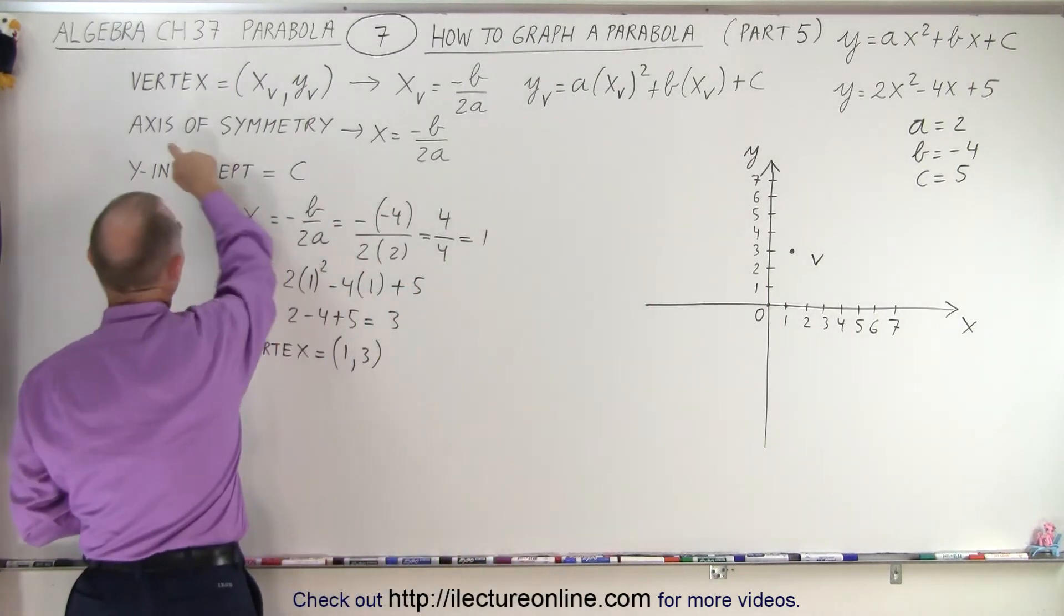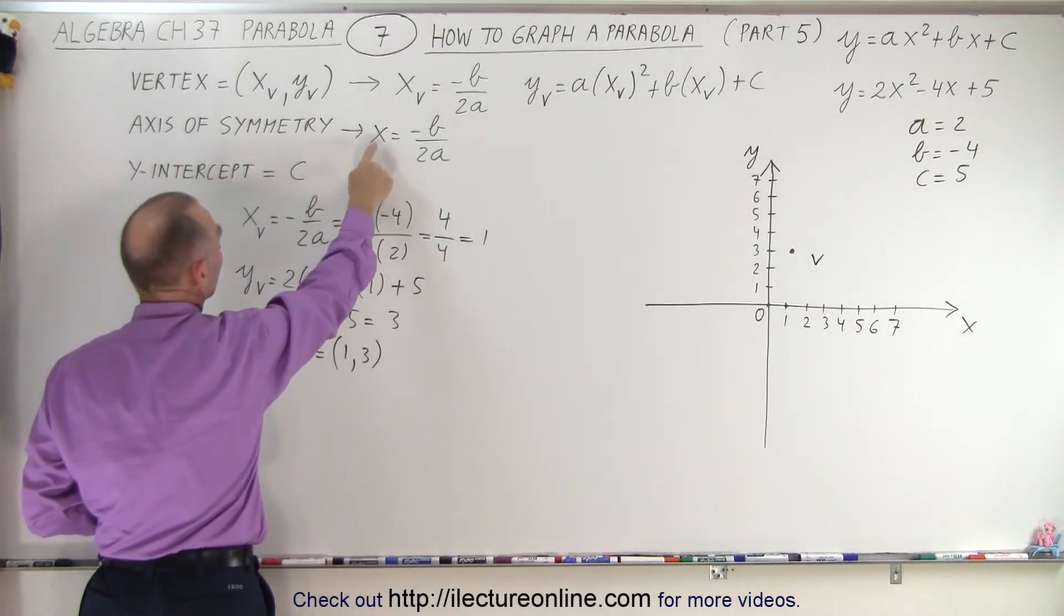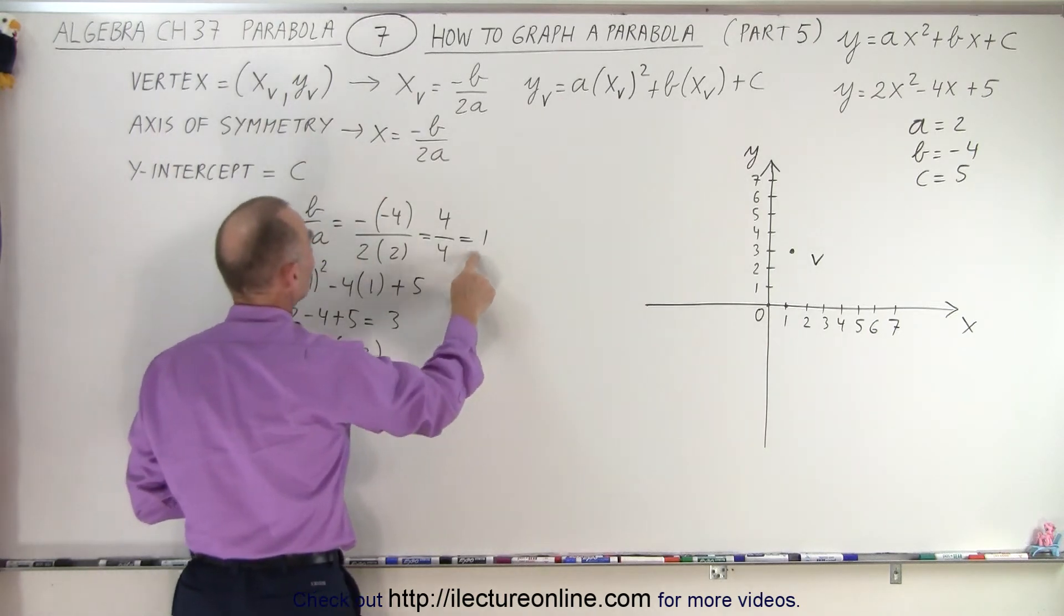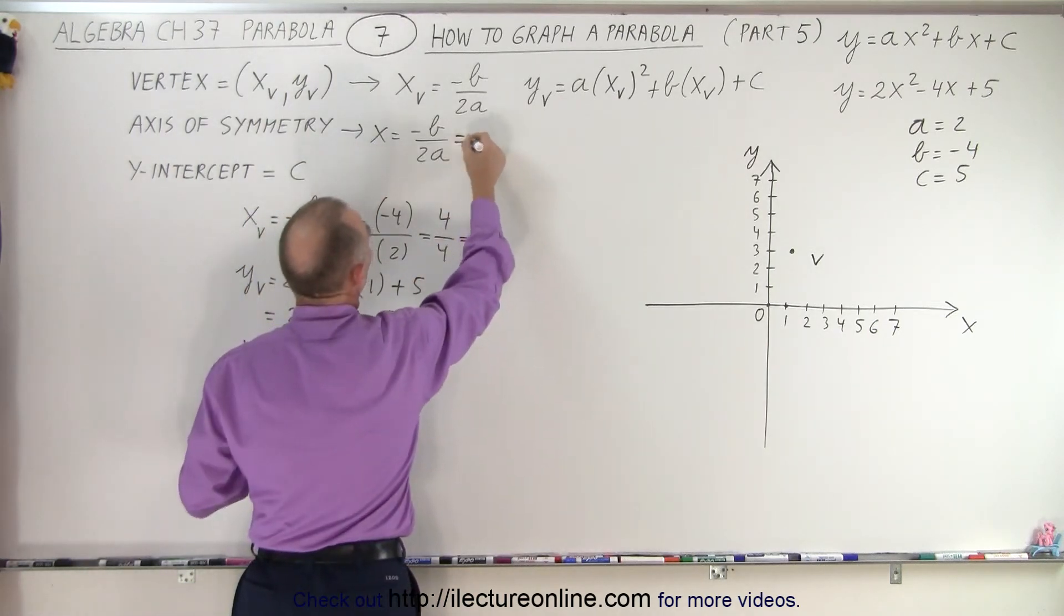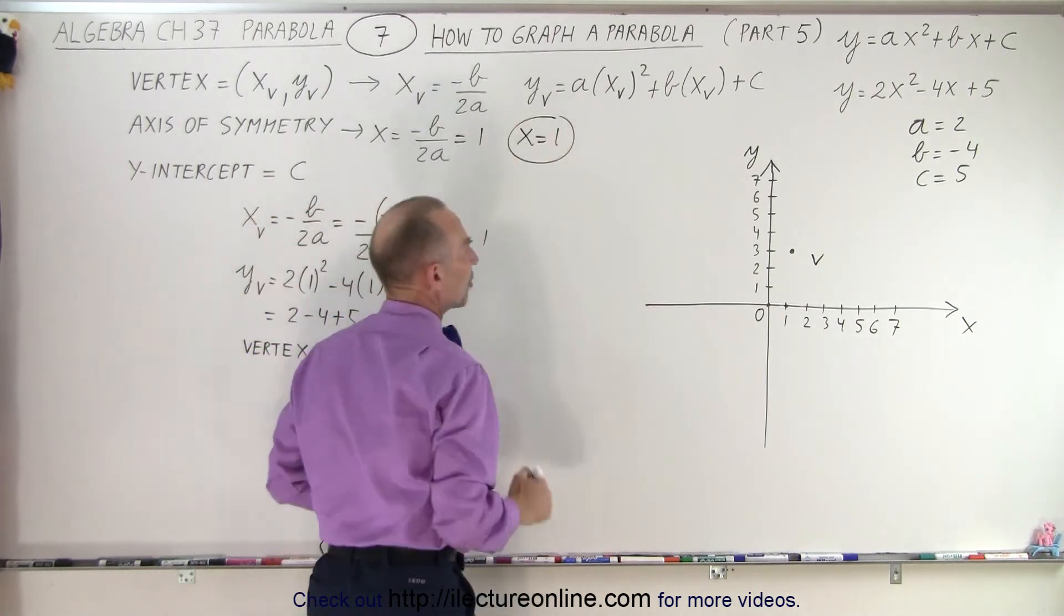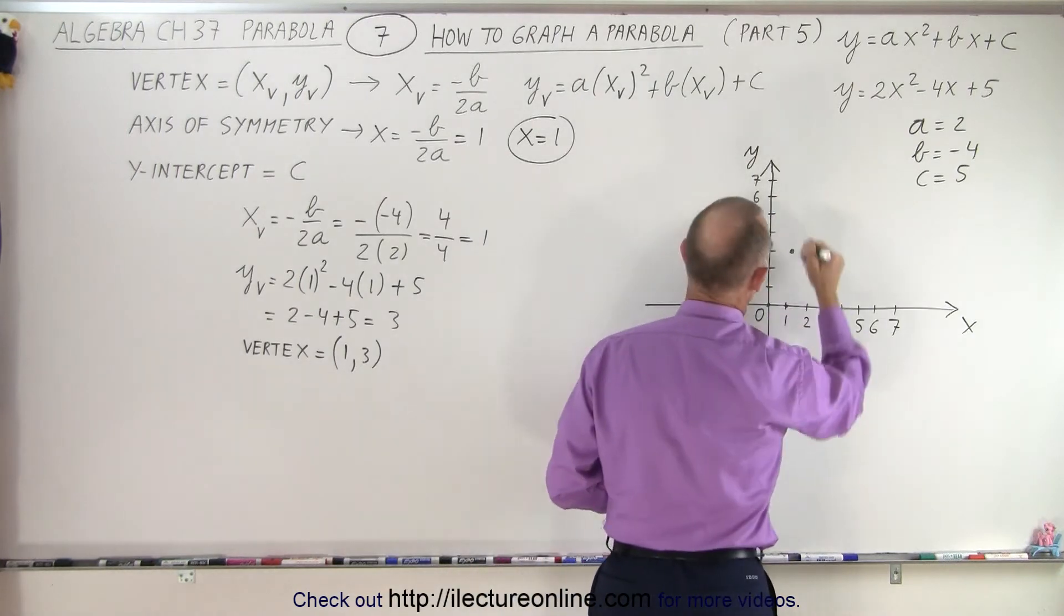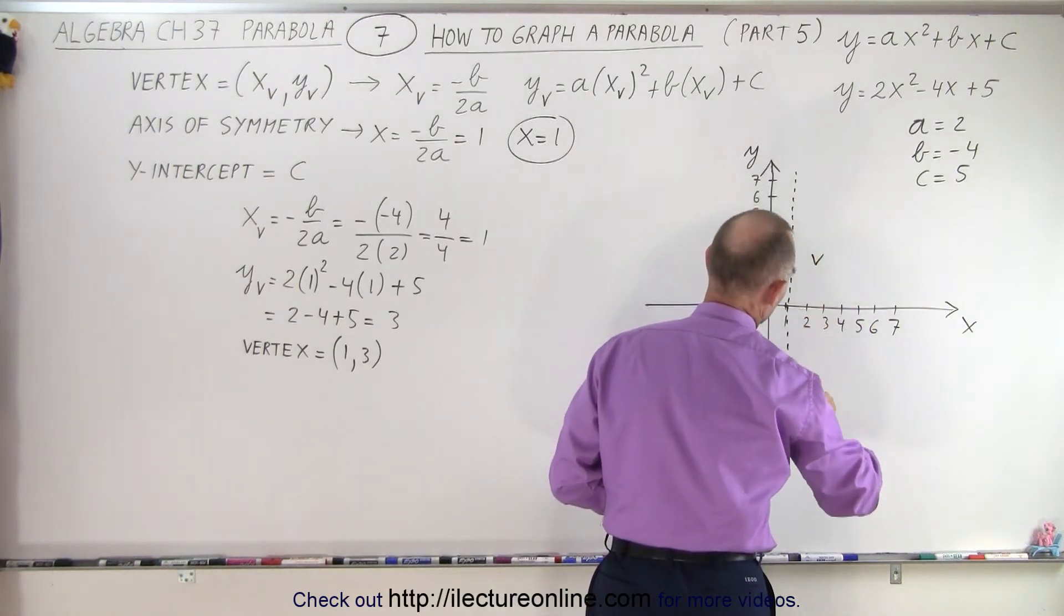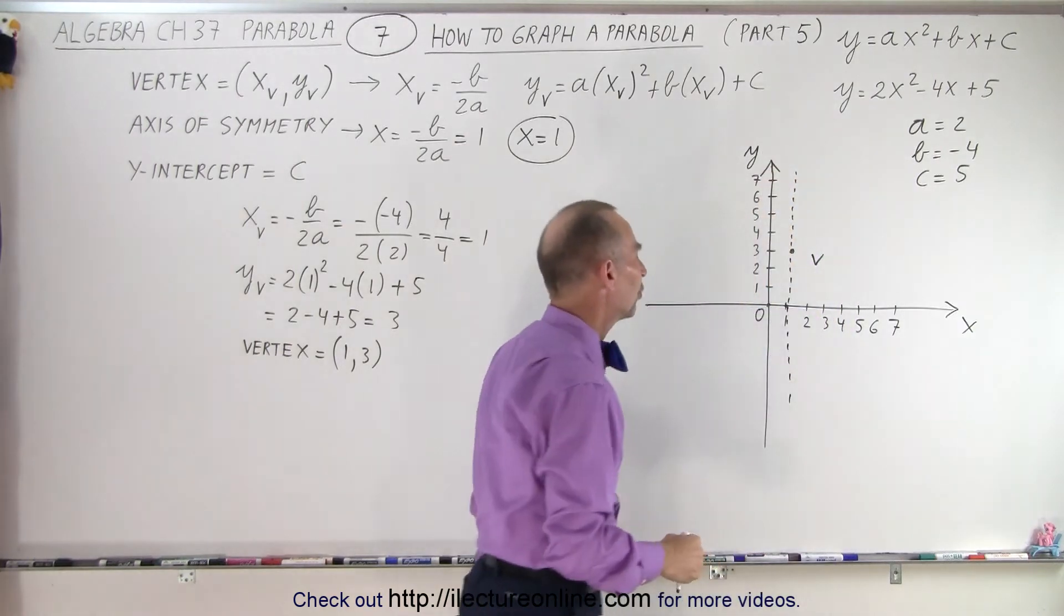let's go ahead and write the axis of symmetry. Axis of symmetry is the equation x equals minus b over 2a, which we now know is equal to 1. So the equation x equals 1 is the axis of symmetry. And x equals 1, of course, is the line that goes through the value x equals 1, and is parallel to the y-axis.